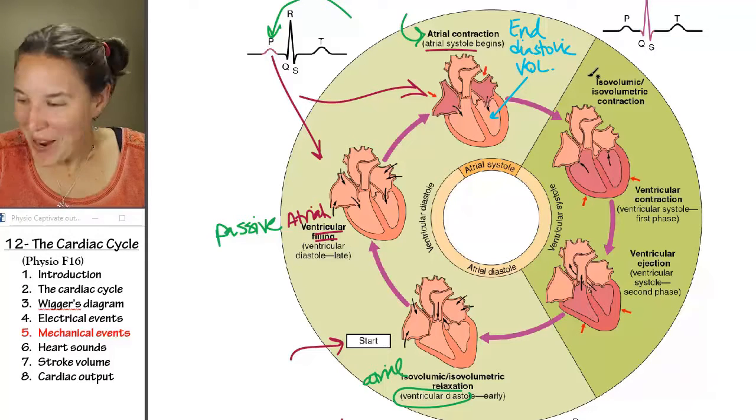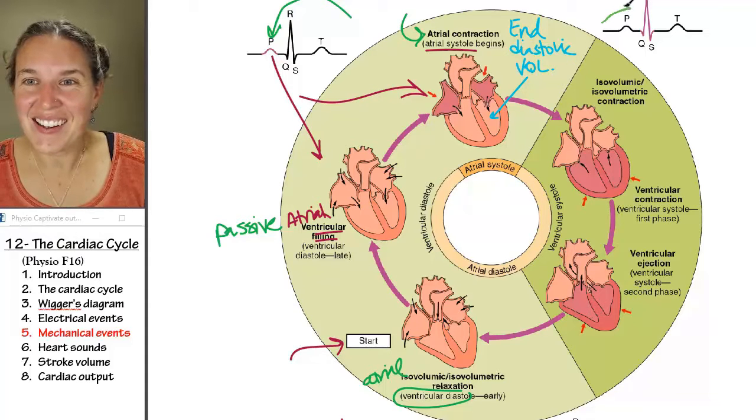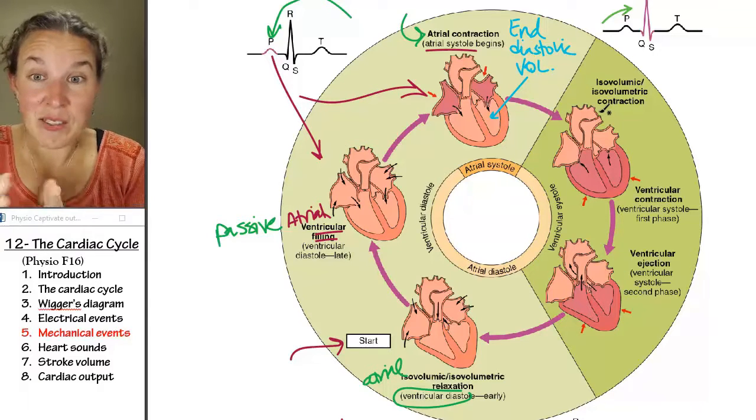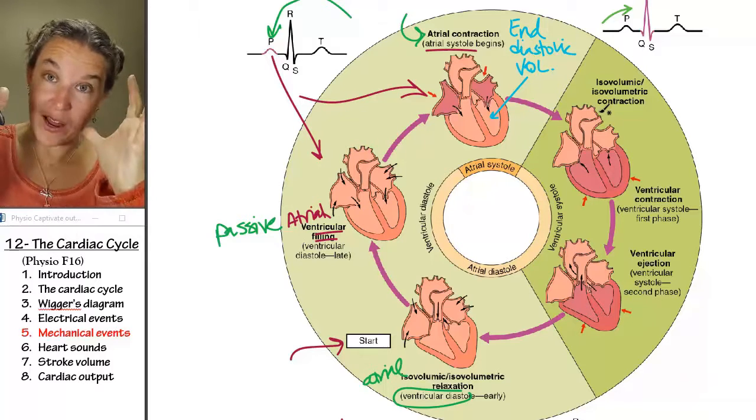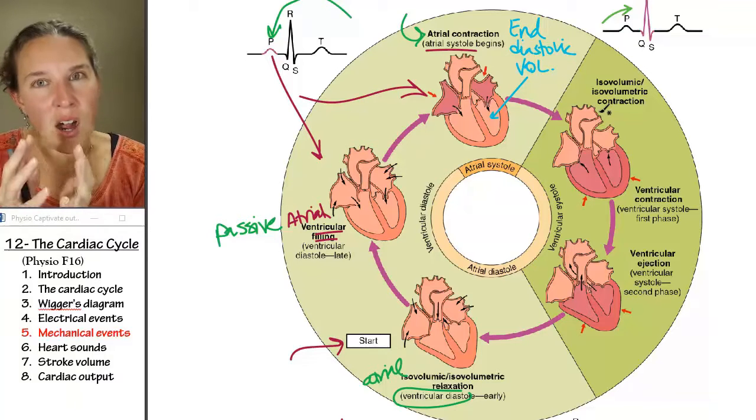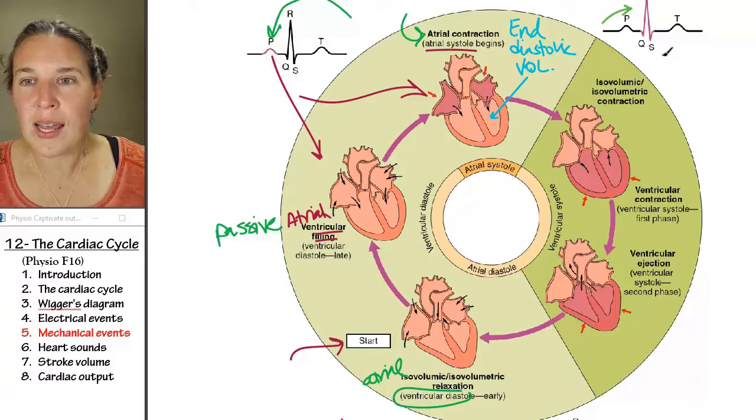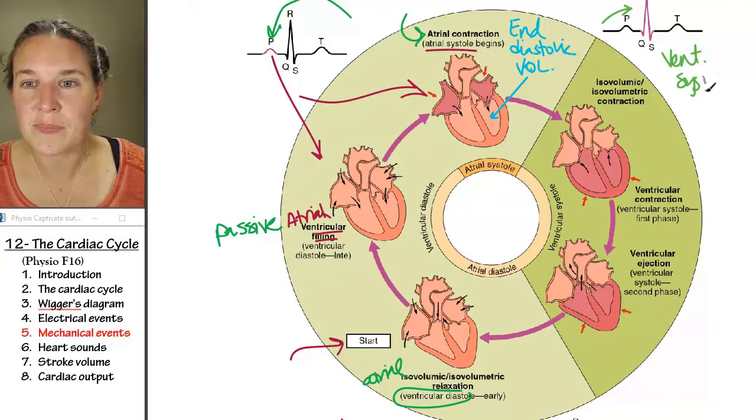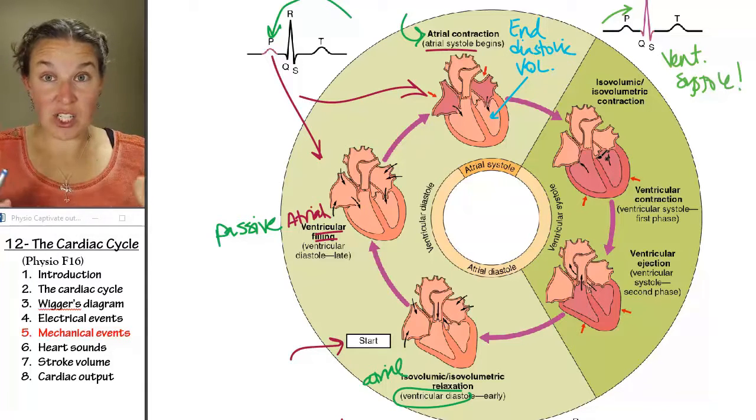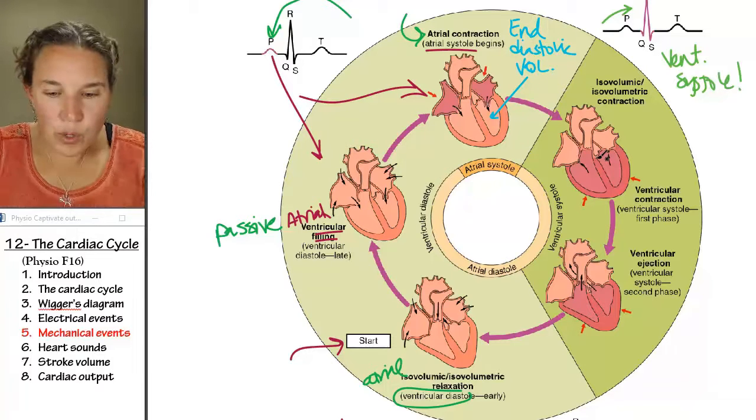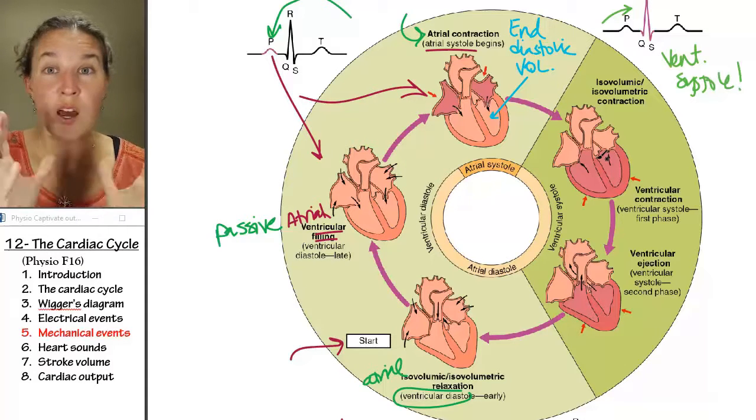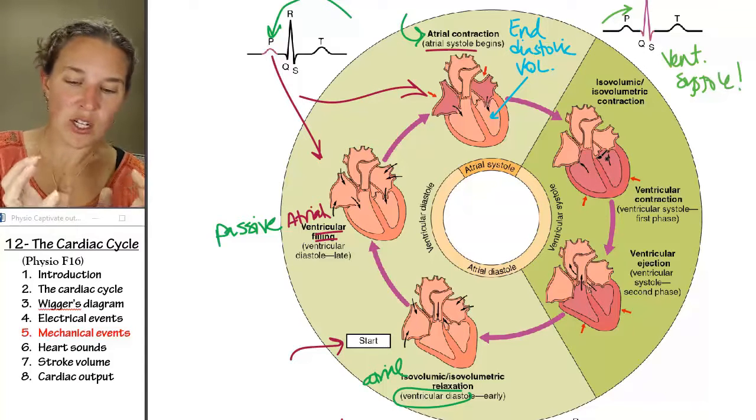And then what happens? We end up with the action potential passing through the AV node into the AV bundle, down the bundle branches and up the Purkinje fibers, and so the ventricles are starting to depolarize. What is that going to cause to happen? We're going to end up with ventricular systole. Ventricular systole happens and it takes a bit for the message to get through the ventricles but then once we get through ventricles start contracting from the bottom up and that has to do with the arrangement of those auto-rhythmic fibers. So they start contracting, do you agree with this?